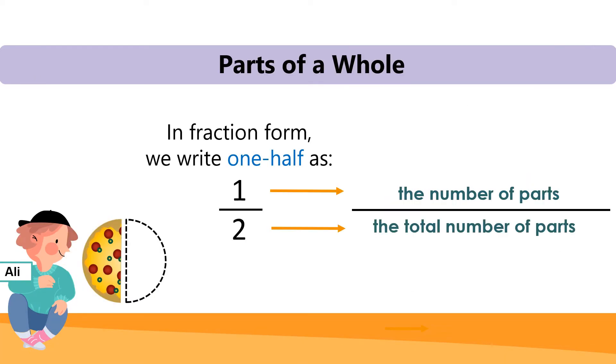In fraction form, we write one half as one bar two. So one out of two. There's a line in between. The number on top represents the number of parts. Okay? Because it's parts of a whole. The number at the bottom is the total number of parts. So how many parts all together? Remember, the parts have to be equal.